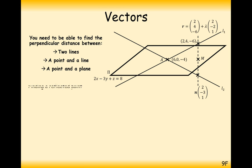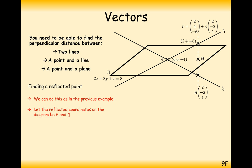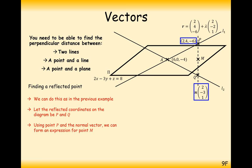Now we have to reflect the point (2, 4, -6) in the plane, using the method from the previous example. We create a perpendicular line starting at (2, 4, -6) with direction vector (2, -3, 1), since it travels perpendicular to the plane. So coordinate M is at (2, 4, -6) + λ(2, -3, 1) for some value of lambda. We need to find λ such that the midpoint M meets the plane.